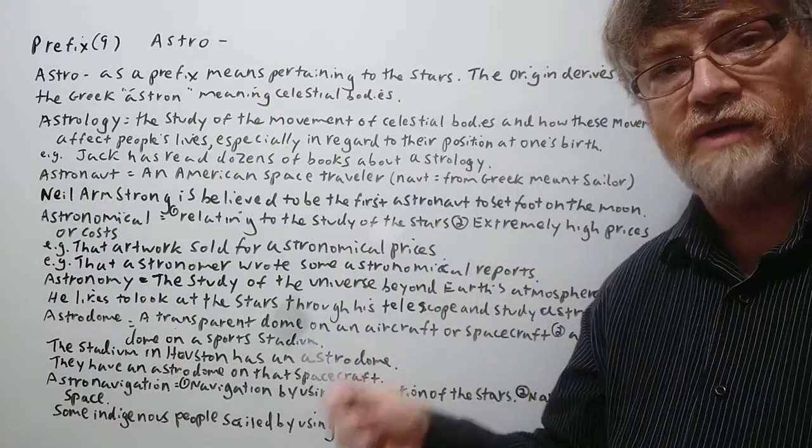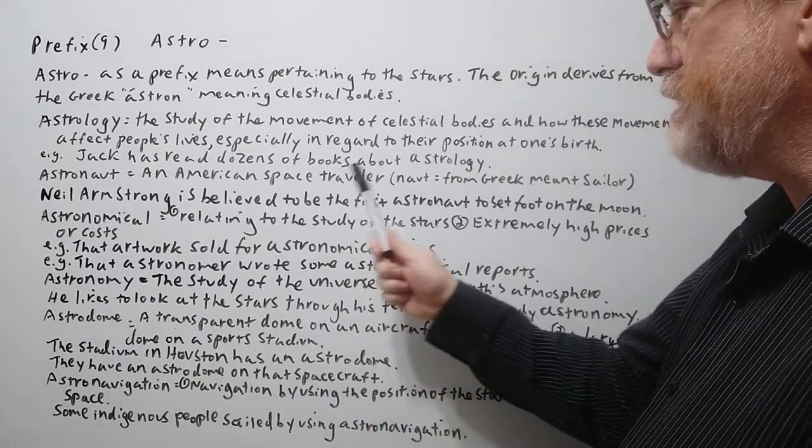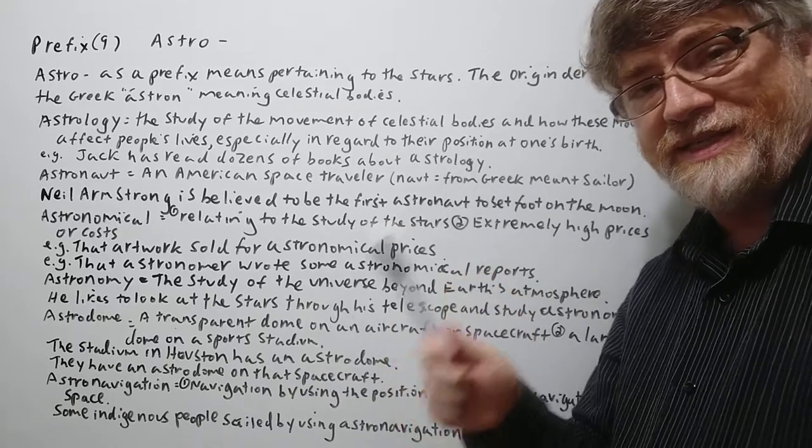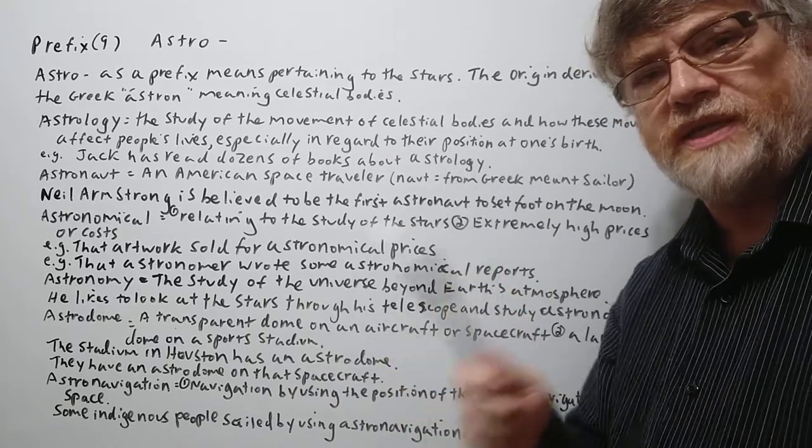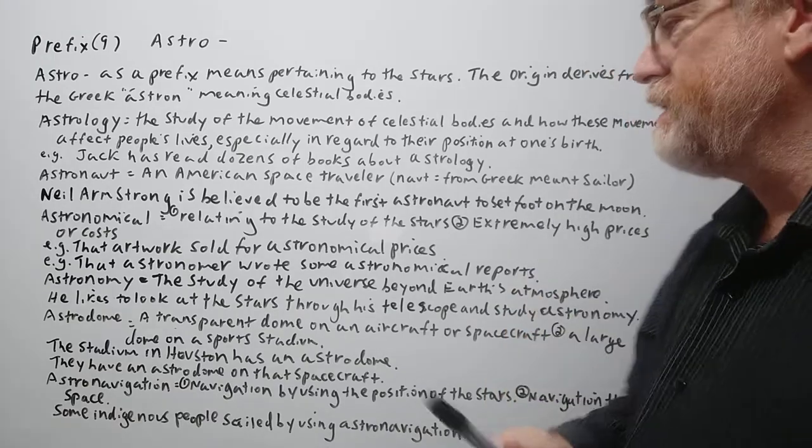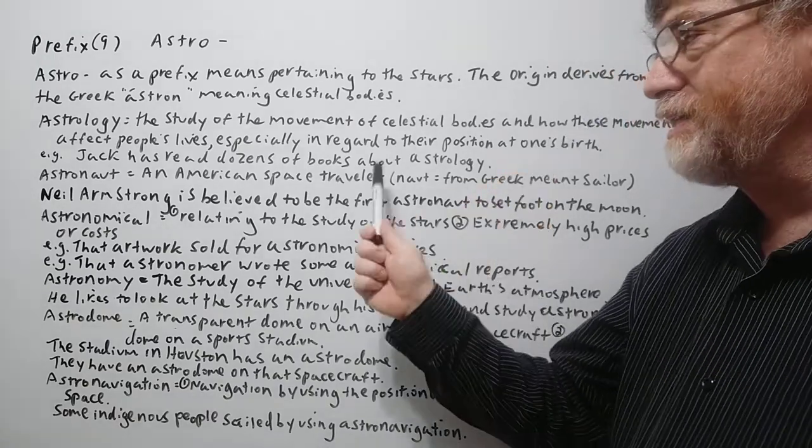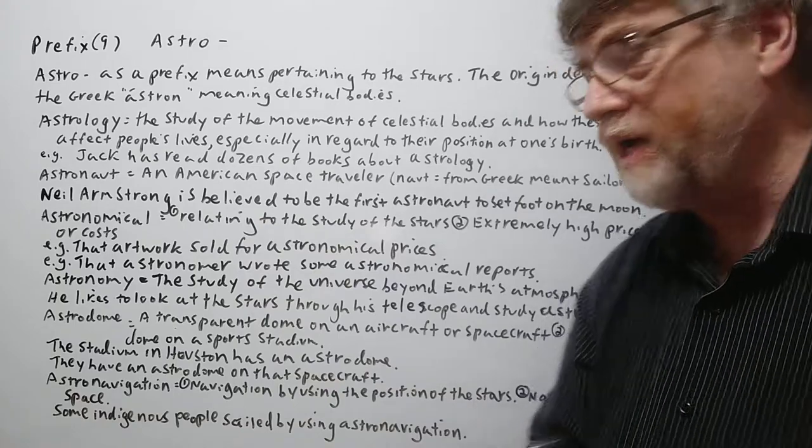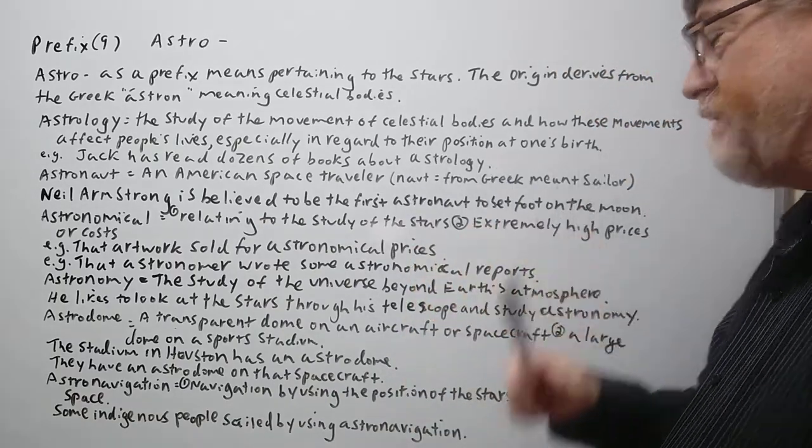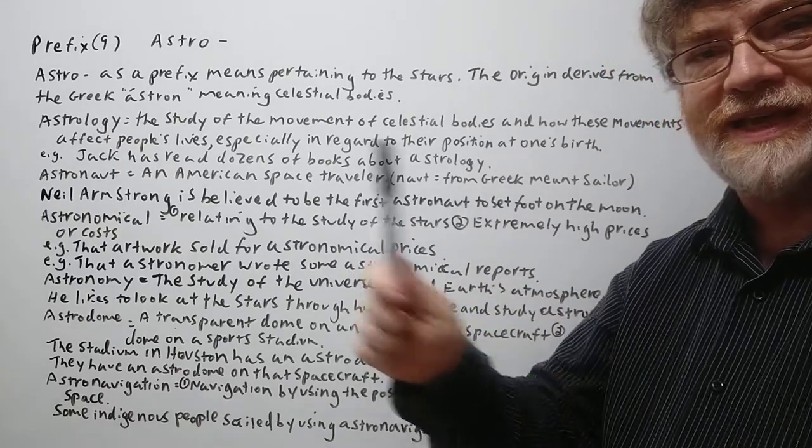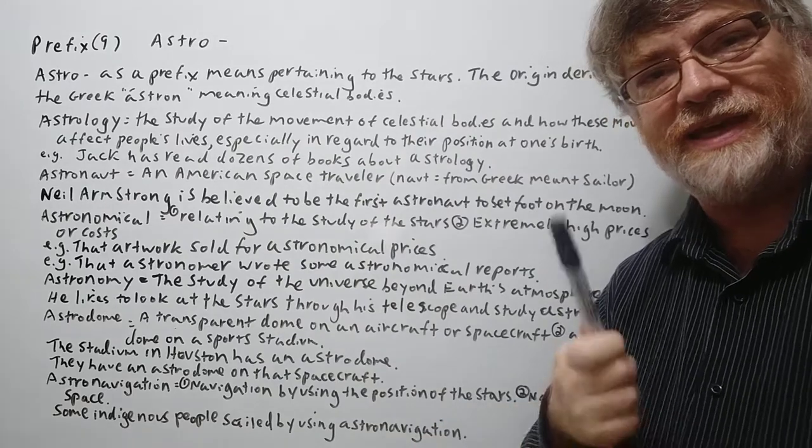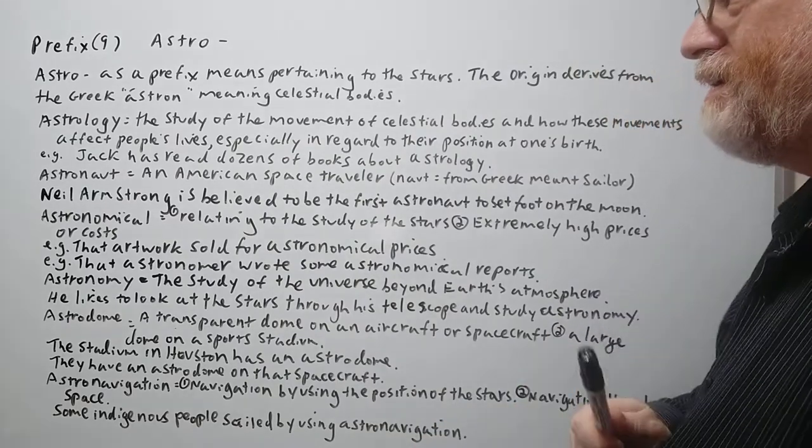The next one, astronaut. Of course, an American space traveler. Remember the other space agencies have different names like Russia, I think it's a cosmonaut, and I think Chinese is a taikonaut. So only the American space traveler is an astronaut. And the not or naut comes from Greek meaning sailor. So I guess the idea was like a star sailor. That's how they got the idea for astronaut.